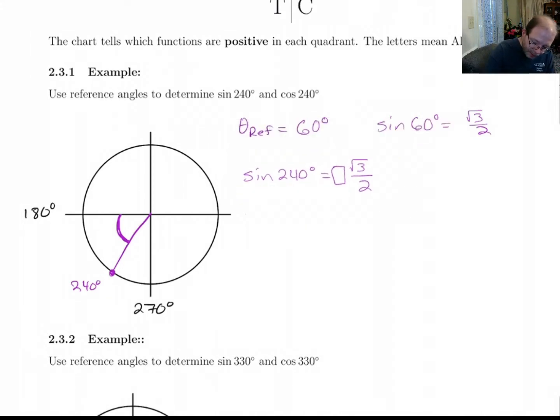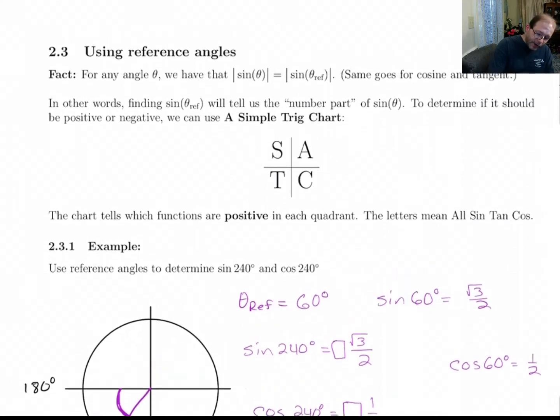Ditto for cosine. Cosine of 240, we can figure that out by coming over to the side and saying, well, cosine of 60 degrees, that's a half. So this is also going to be a half, but does it need to be positive or negative? Well, we've got to figure that out. And here's how you figure that part out.